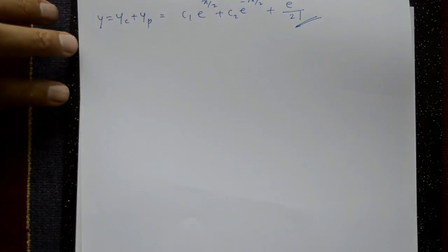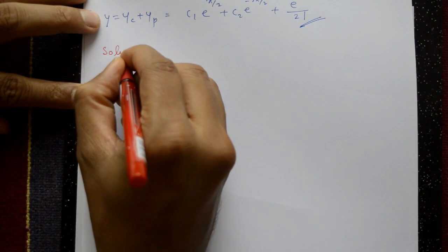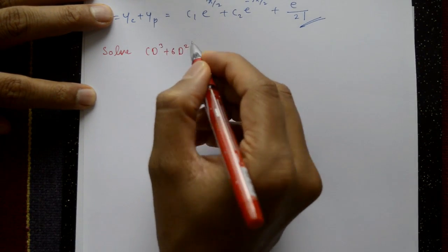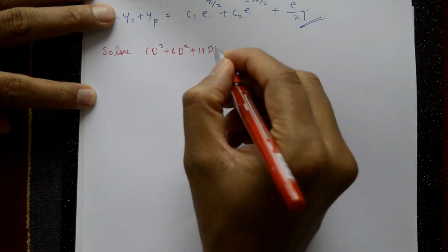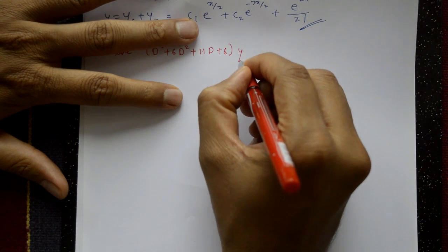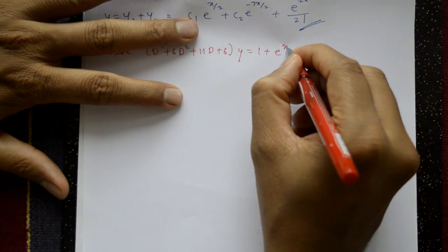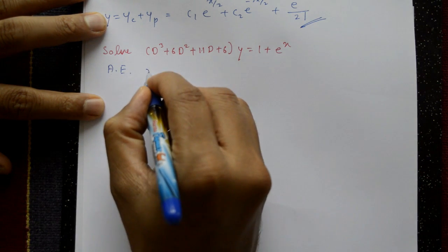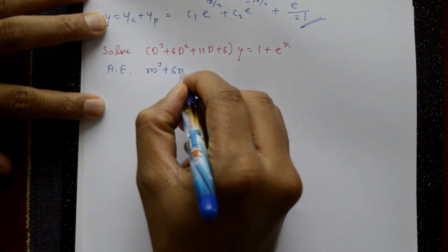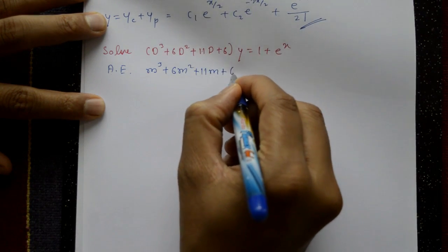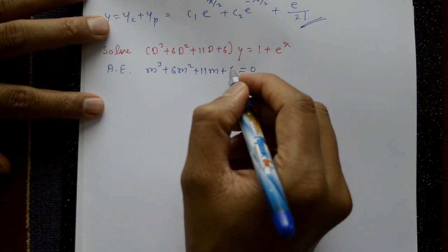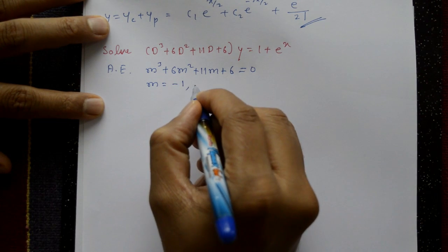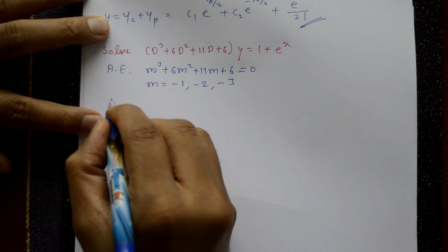Next example: (D³ + 6D² + 11D + 6)y = 1 + e^x. The auxiliary equation is m³ + 6m² + 11m + 6 = 0. Using a calculator, the roots are m = -1, -2, -3.